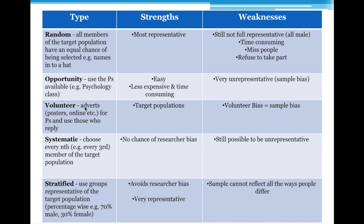With volunteer sampling, putting up adverts lets you target specific populations. If your study is on attachment and you need newborn babies and their mothers, you could go into a maternity ward and put up posters to get the people you need. If you need participants for a study into obesity, you could put your posters in relevant places. So you're getting people that you actually need for your study — that's a real positive.